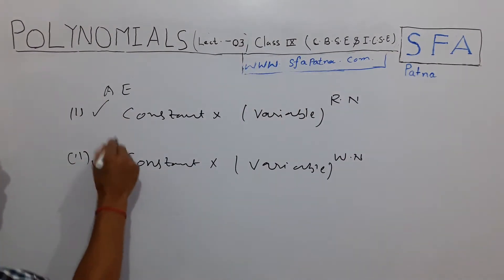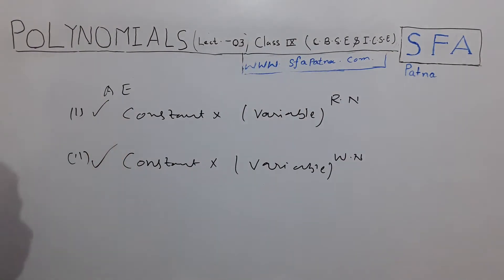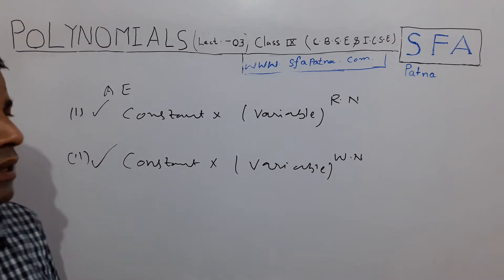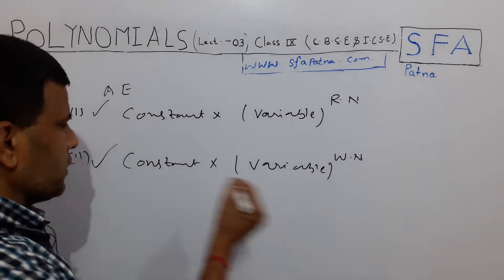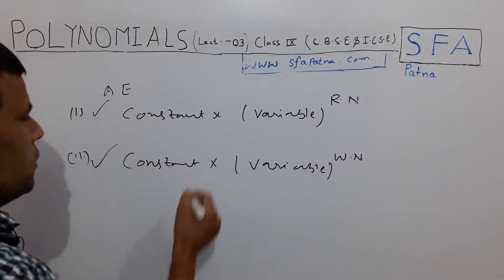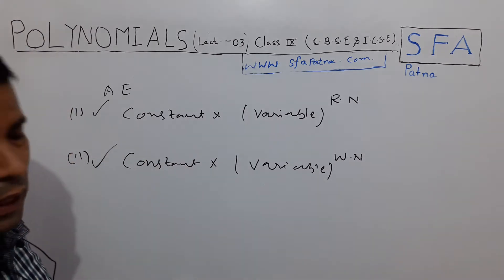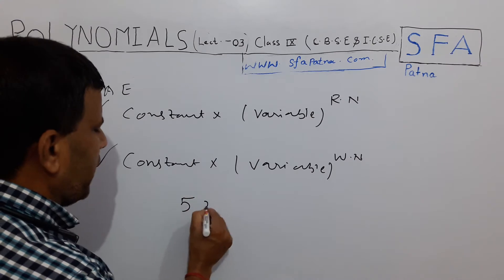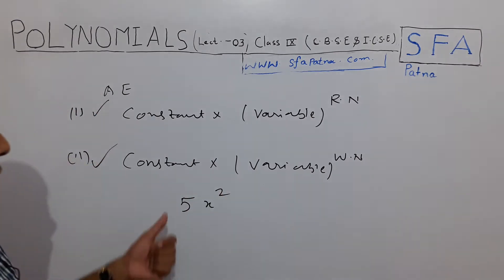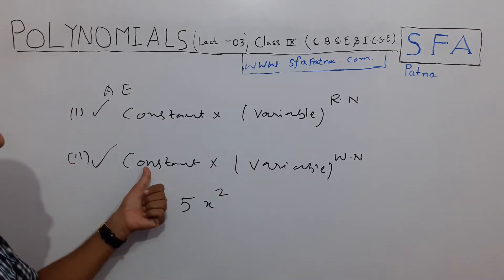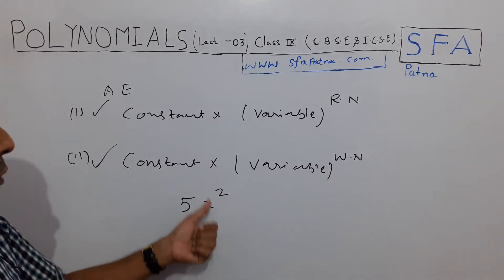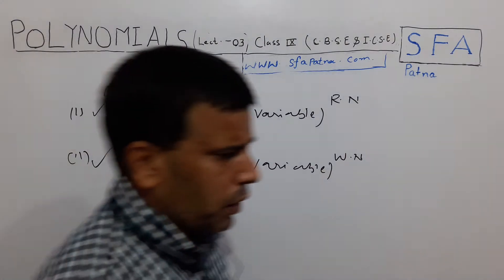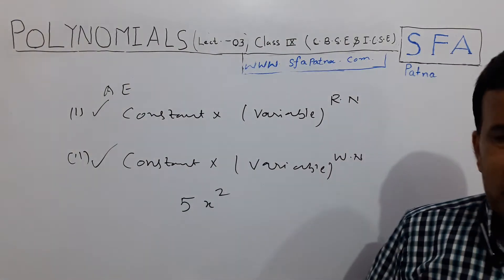If you have not gone through the previous lectures, please go back to them. For example, consider the polynomial 5x². Here 5 is your constant, x is your variable, and the power of the variable is 2. And 2 is a whole number, right.